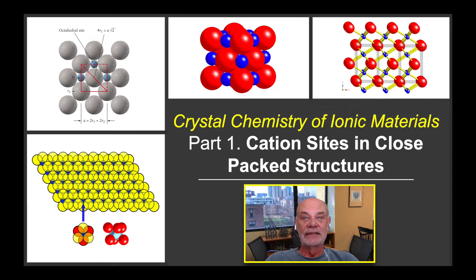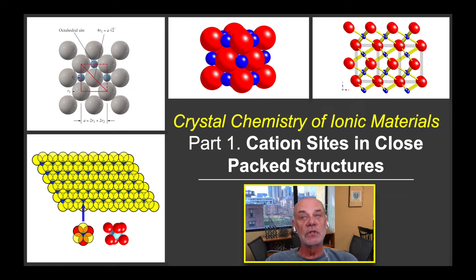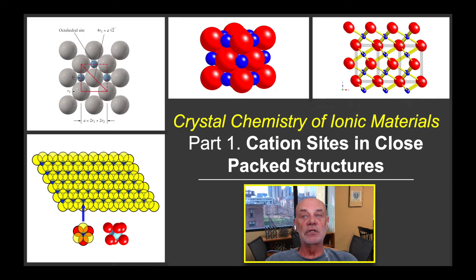Hello, and welcome. This three-part series of videos on the crystal chemistry of ionic materials provides an overview of the principles of ionic crystal structures and their representation using polyhedral models. In this first part, we'll begin with a short review of cation sites in structures where the anions are close packed, show how simple methods such as radius ratio rules are used to predict cation locations in interstitial sites, and explain how structures of many materials can be predicted just from their chemical formulae. I hope you enjoy.